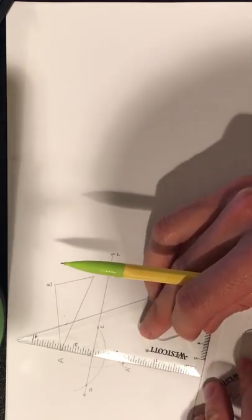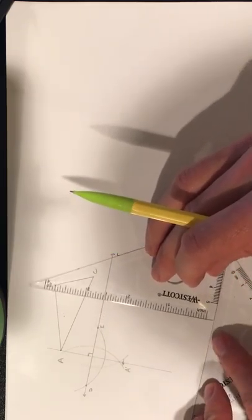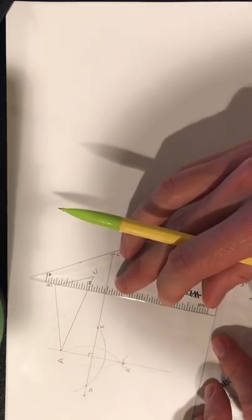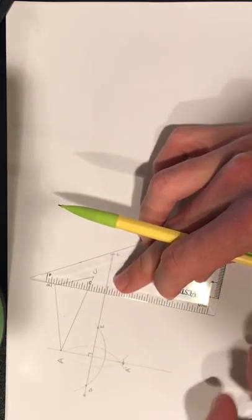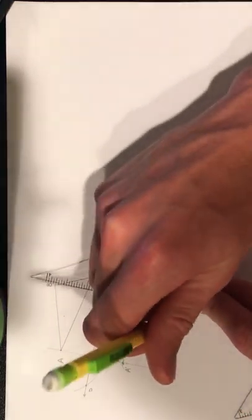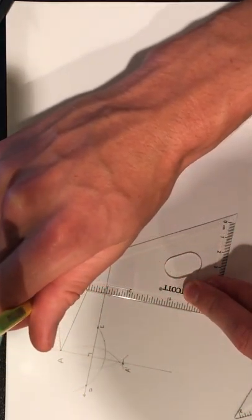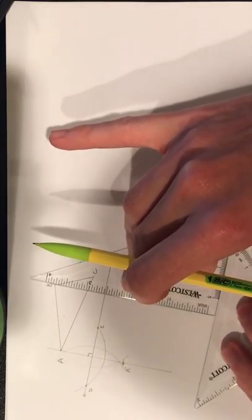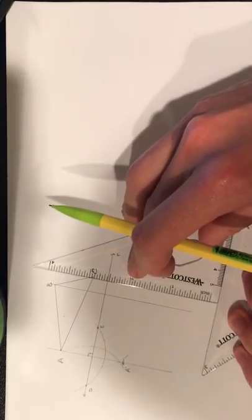I'm going to move over to B, let go of my transversal and mark in my line of reflection. Get that transversal back in there again, get to C, and mark in that line of reflection.